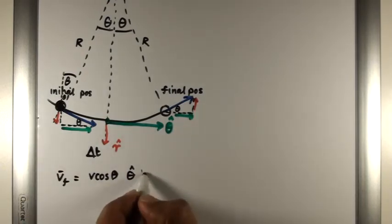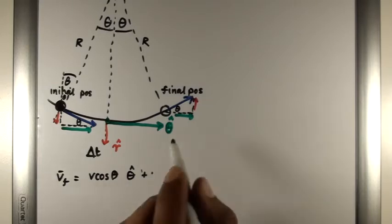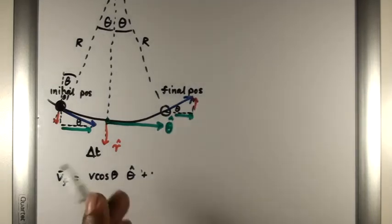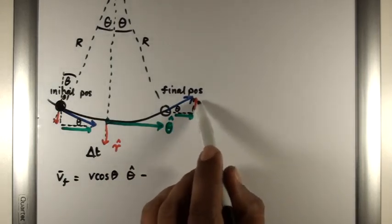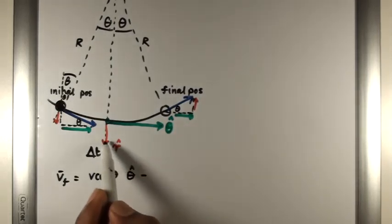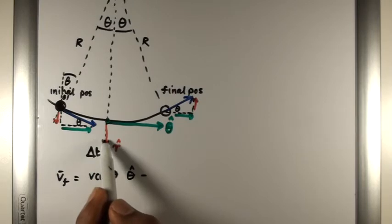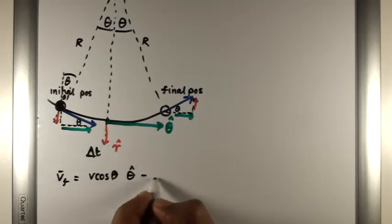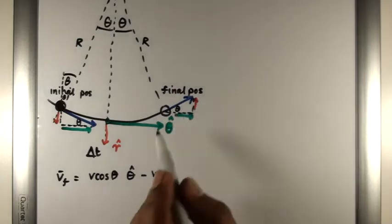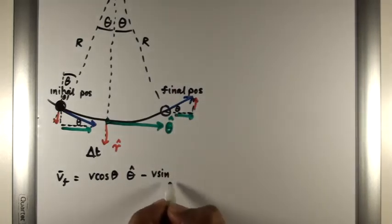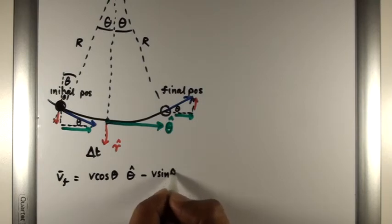And over here we have a positive—actually sorry, it's a negative velocity, because the red arrow here points in the opposite direction to the radial direction. So the radial component of the velocity over here will be minus V sine theta in the radial direction.